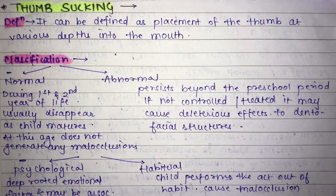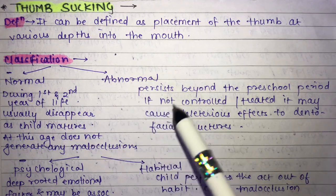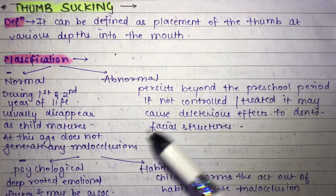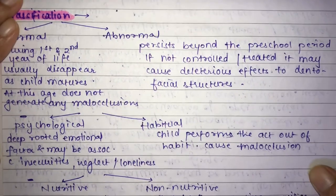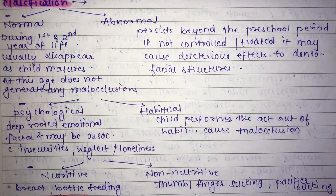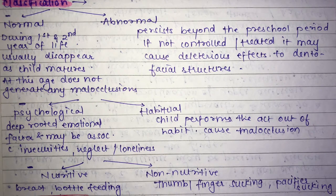Thumb sucking is classified as normal or abnormal. Normal thumb sucking is present during the first and second years of life and usually disappears as the child matures. Abnormal thumb sucking persists beyond the preschool period; if not controlled or treated, it may cause deleterious effects to the dental facial structures leading to malocclusion. It is also classified as psychological — due to deep-rooted emotional factors like insecurities, neglect, or loneliness — and habitual, where the child performs the act out of habit.